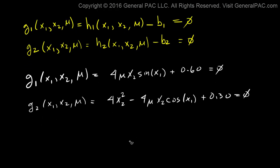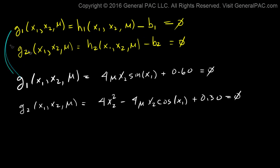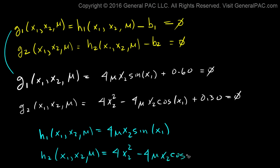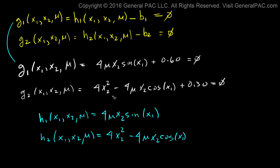Notice that these two equations are the same thing, which means h1 of x1, x2, and u is equal to 4u x2 sine of x1. And h2 of x1, x2, u is equal to 4x2 squared minus 4u x2 cosine of x1. So h1 and h2 are defined by these two equations. This means b1 is equal to negative 0.60, because b1 is already negative and we have a positive there. And b2 is also negative 0.30.